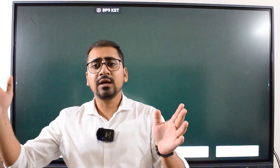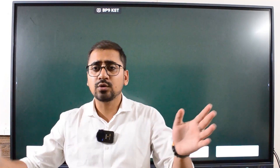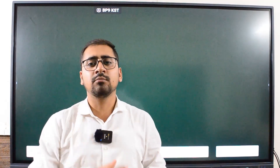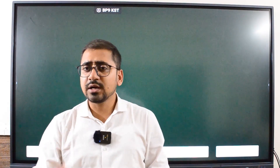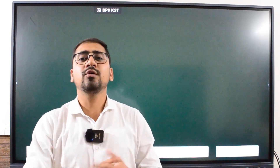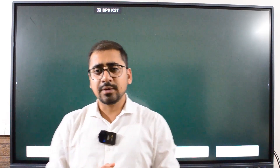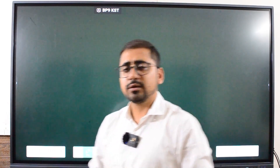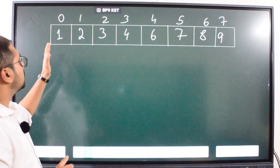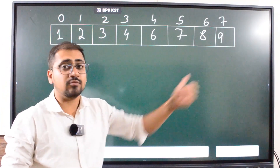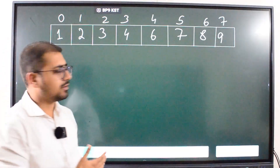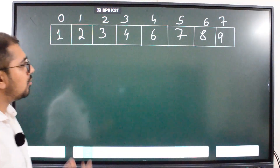Let's say n is equal to 10, so one to n gives us 10 numbers, but in the array you will have only nine numbers. It is clear that there is one missing element. For example, we have the array: 1, 2, 3, 4, 6, 7, 8, and 9. The missing number is clearly 5.